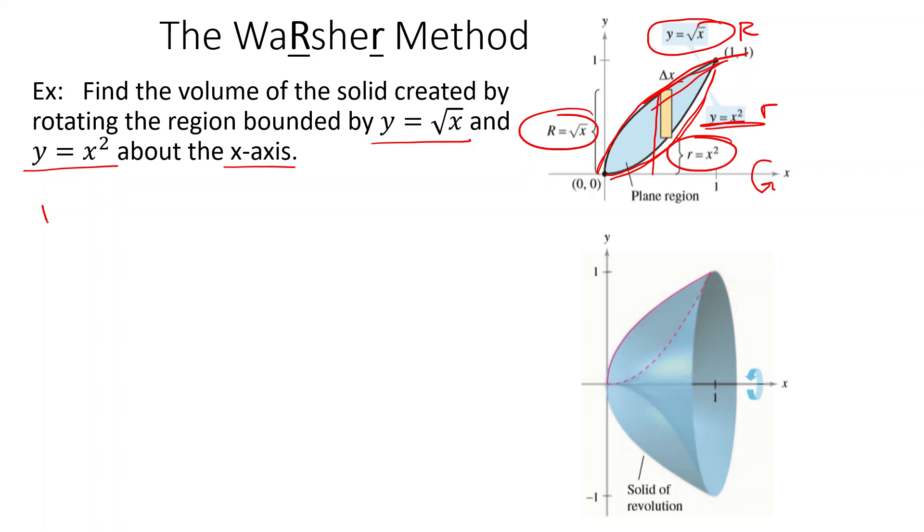So what ends up happening is the volume is pi times the integral. And then we see where do they cross here? They go from 0 to 1, x values. So it's from 0 to 1 of big R, which is the square root of x squared, minus little r, which is x-squared, squared, dx.